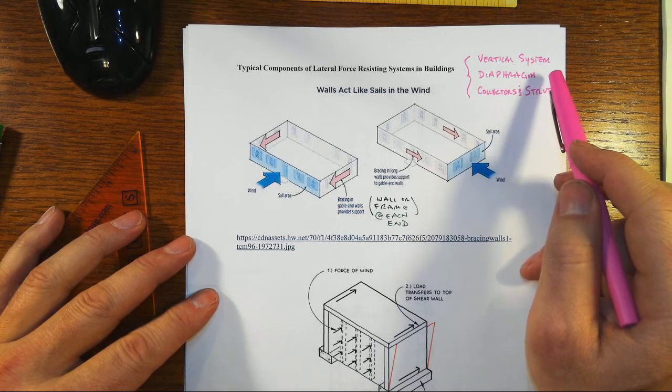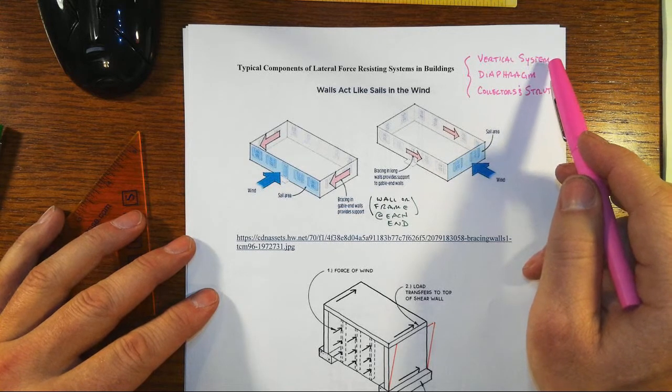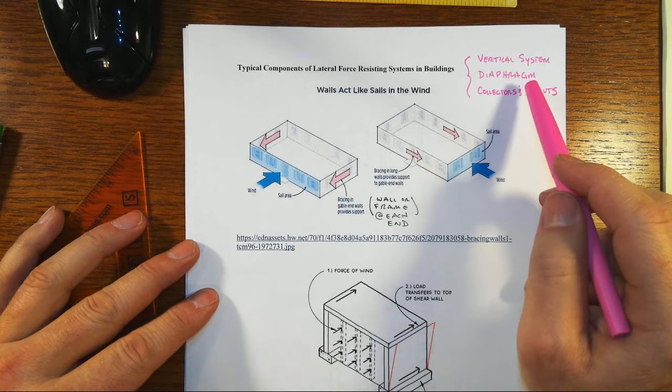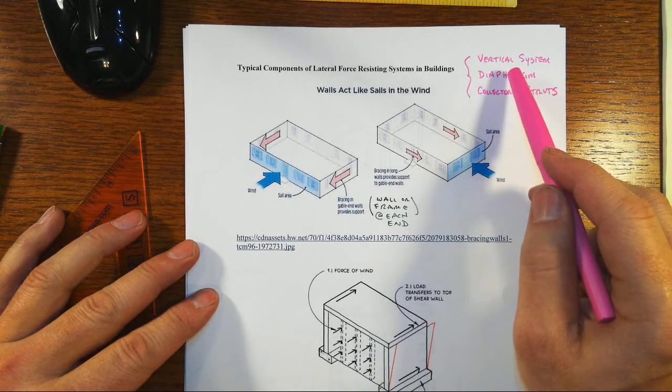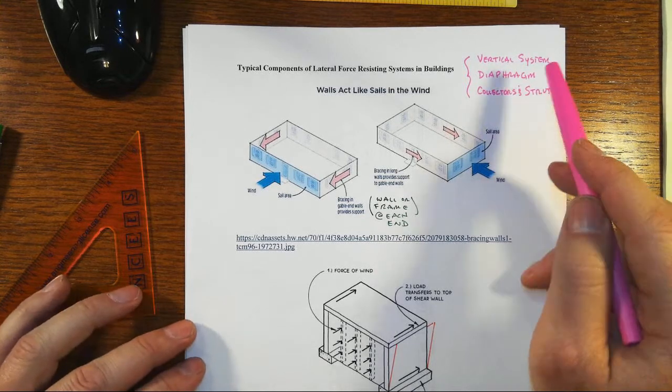But how does the whole system actually work from point of application of forces all the way to the vertical system? And that includes the diaphragm and collectors and struts. We're going to predominantly just focus on overall types of behavior and the different kinds of diaphragms.